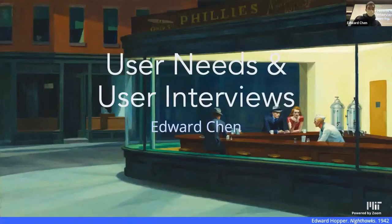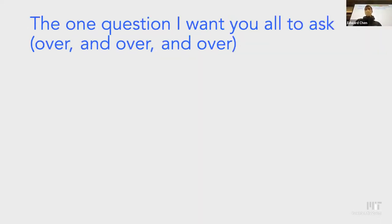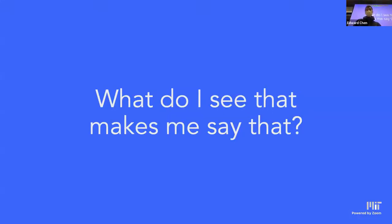We'll be talking about user needs and user interviews. If there's one thing you can learn from this lecture — from the next 30 minutes — I hope it will be this: there's one question I want all of you to be asking over and over again, whenever you're thinking about design or anything outside of design. That question is: what do you see that makes you say that? Whenever you make any sort of observation, ask yourself why you made it — what do you see that makes you say X? This is based on a concept from teaching art called Visual Thinking Strategies, or VTS.